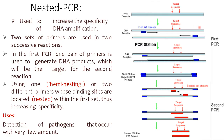Nested PCR is used to increase the specificity of DNA amplification. Here, two sets of primers are used in two successive reactions. In the first PCR, one pair of primers generates a DNA product, which is then targeted in the second reaction using one or two different primers whose binding sites are located — or nested — within the first set, thus increasing specificity. This is used for pathogens that occur in very low amounts.